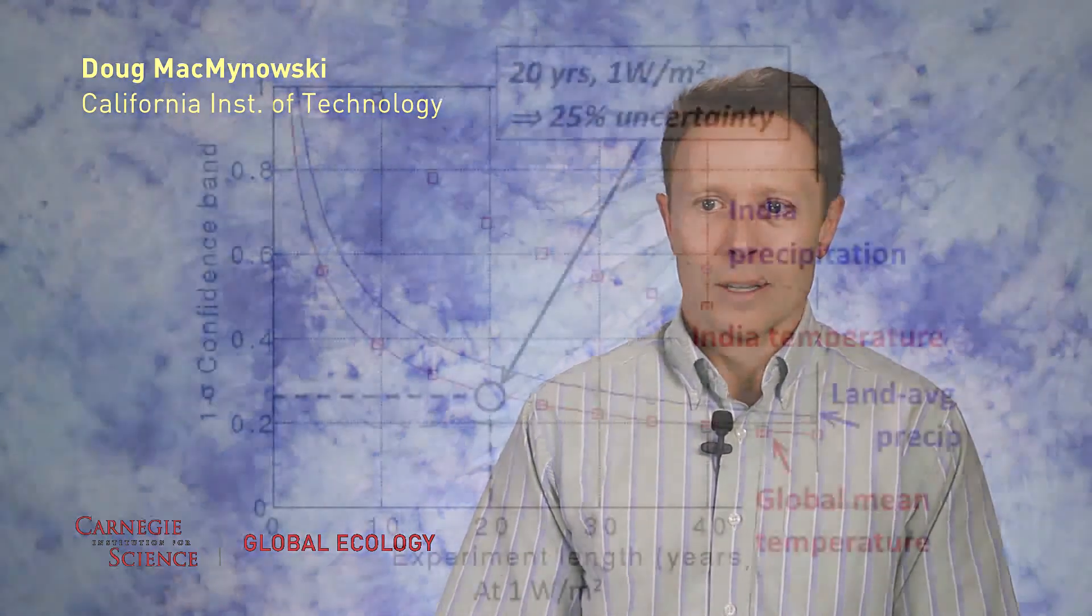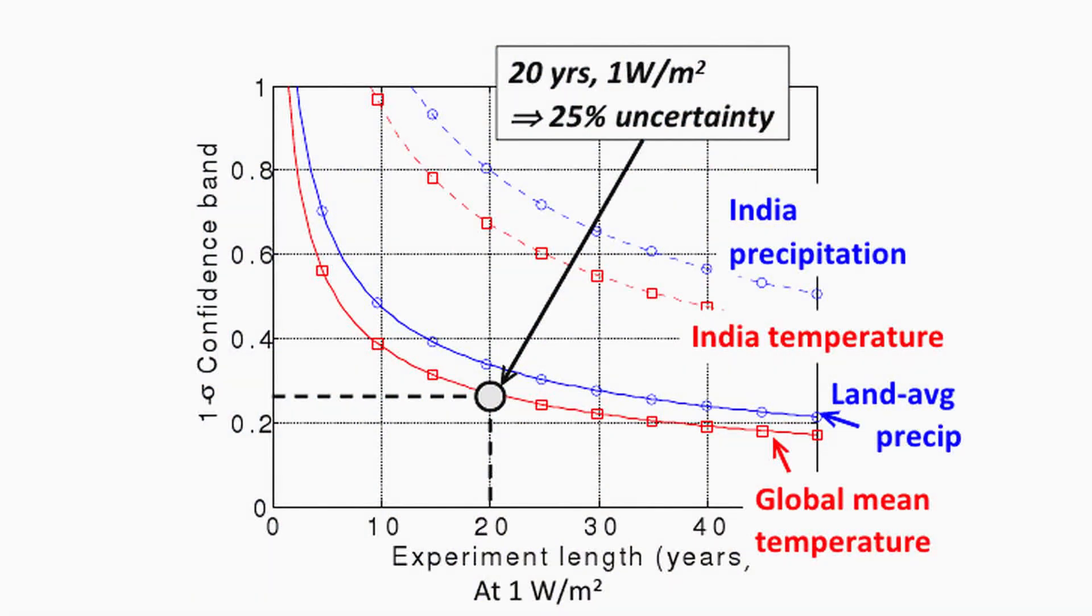The second question is how long does it take to do the experiment and learn what you'd like to learn? And the short answer there is if you do a test with, for example, one watt per square meter of radiative forcing, which is a fair amount, and you ran that test for about 20 years, then you would learn the global climate sensitivity to about 25 percent accuracy and much worse accuracy for trying to see what the response is over places like India.